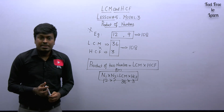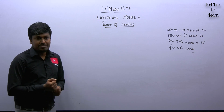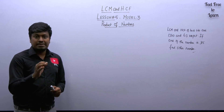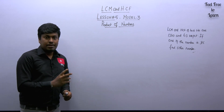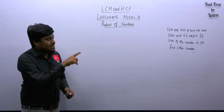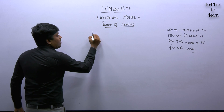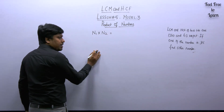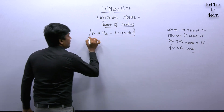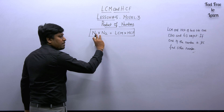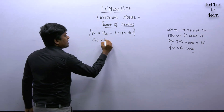Now let's move to example question number one: LCM and HCF of two numbers are 1260 and 63 respectively. If one of the numbers is 315, find the other number. The values given are: first number = 315, LCM = 1260, HCF = 63. We apply the property we just learned: product of two numbers equals product of LCM and HCF.